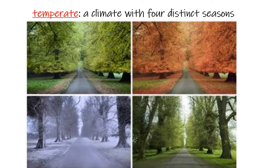Now let's look at different types of climates. Here in Virginia, we have what's called a temperate climate, t-e-m-p-e-r-a-t-e. A temperate climate has four distinct seasons — spring, summer, fall, and winter — that are clearly different from one another, ranging from very cold temperatures all the way up through very warm temperatures.